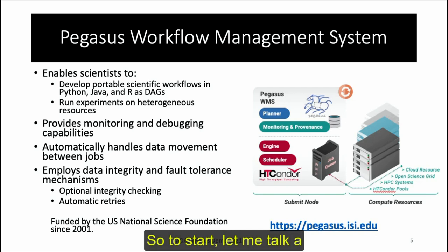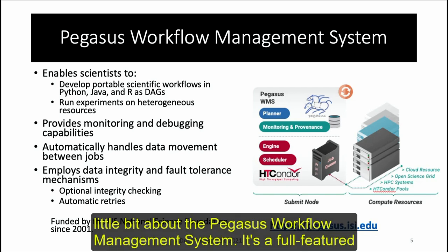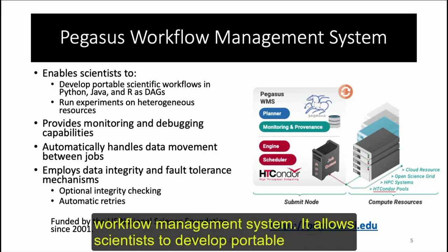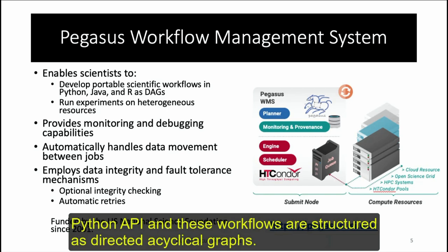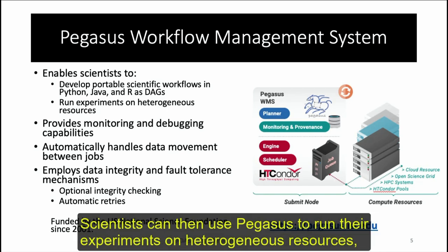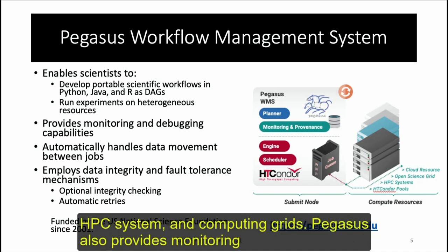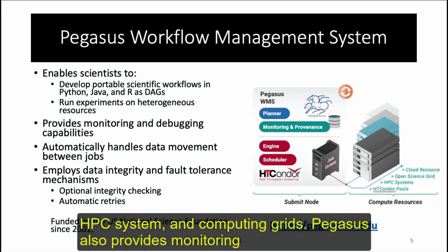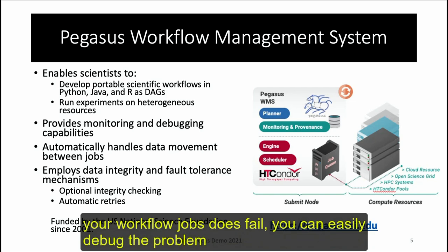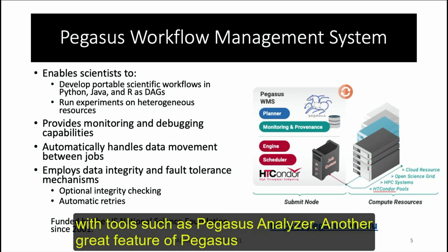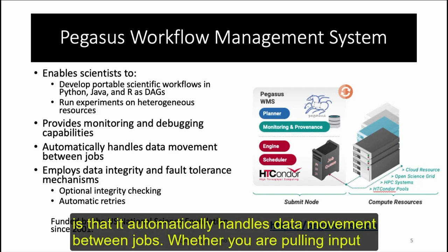Pegasus is a fully featured workflow management system. It allows scientists to develop portable science workflows using Python, Java, or R APIs — in this case the Python API. These workflows are structured as directed acyclic graphs. Scientists can use Pegasus to run experiments on heterogeneous resources including local machines, local clusters, clouds, HPC systems, and computing grids. Pegasus also provides monitoring and debugging capabilities via command line tools or a web dashboard, and automatically handles data movement between jobs.